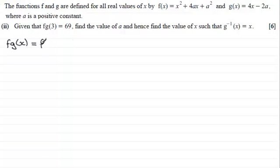And this is going to be f of g of x, and g of x is 4x minus 2a, which means that wherever I see an x now in f of x, I replace it with 4x minus 2a.